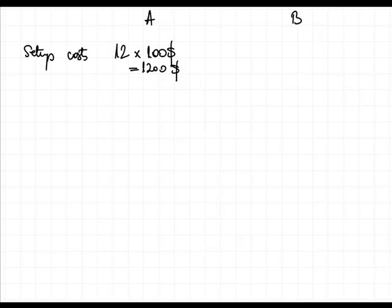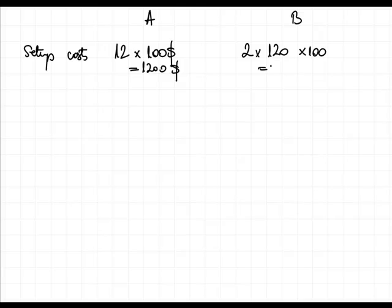In the case of product B, it's a little bit more because we have two setups for each batch and we have 120 batches. So it will be 2 multiplied by 120 batches multiplied by $100, amounting up to $24,000.